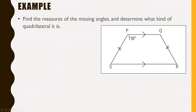Let's do a quick example: find the measures of the missing angles and determine what kind of quadrilateral it is. First, we can determine what kind of quadrilateral it is by looking at it — notice how you have two parallel sides. Just looking at this quadrilateral, I can determine that this is a trapezoid. This is exactly how I would usually think of a trapezoid.